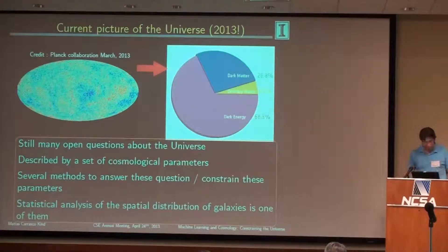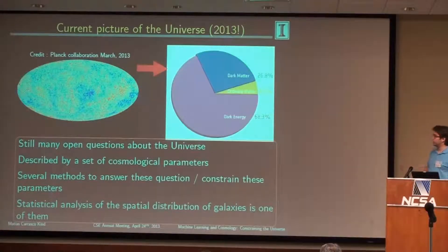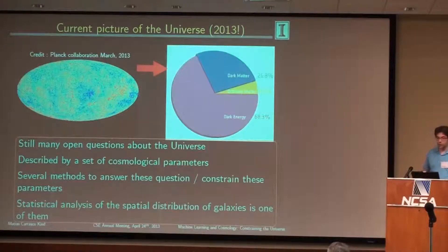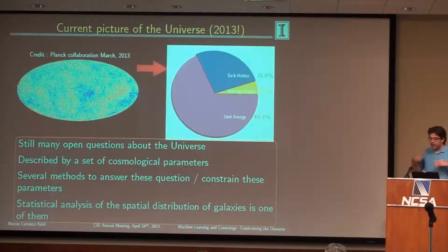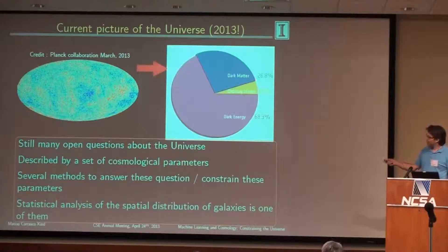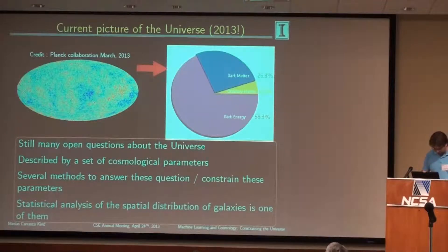The universe can be described as a set of cosmological parameters, and there are several methods to answer these questions or to constrain these parameters. One of them involves measuring the very early universe, but the method we're using here is studying the statistical analysis of the spatial distribution of galaxies. Seeing how galaxies are clustering or distributed in the sky can tell you something about the underlying dark matter. Since we can't see dark matter directly, the galaxies and stars are the only observable we have — just this 5% of data to infer the rest of the universe. That's the challenge we try to contribute to.